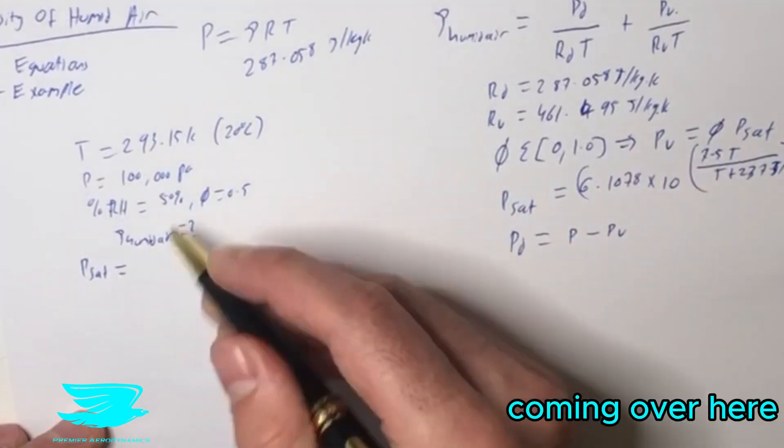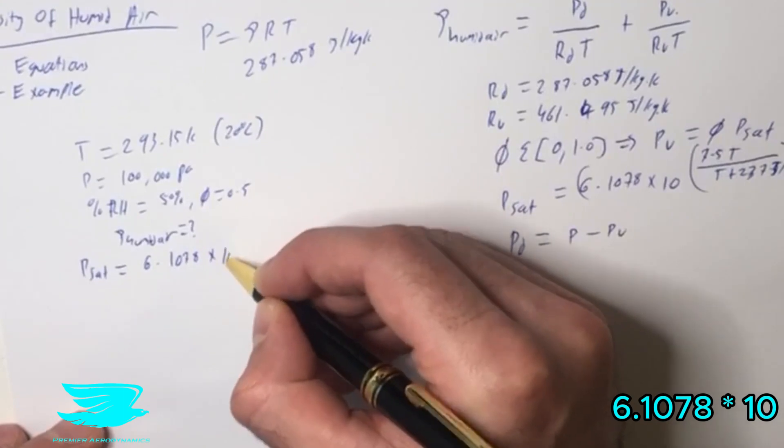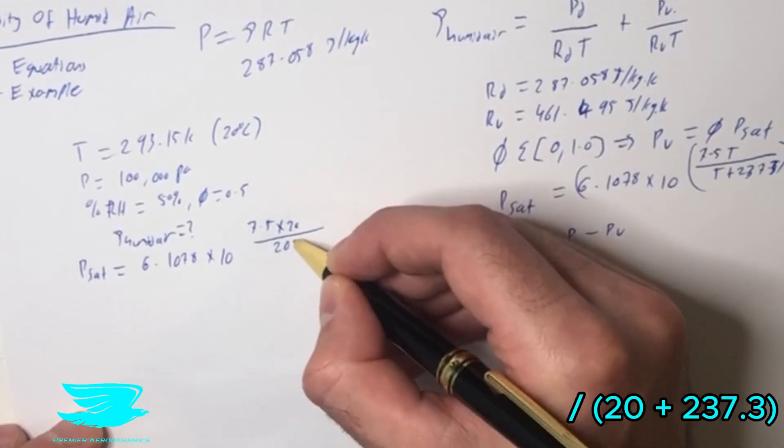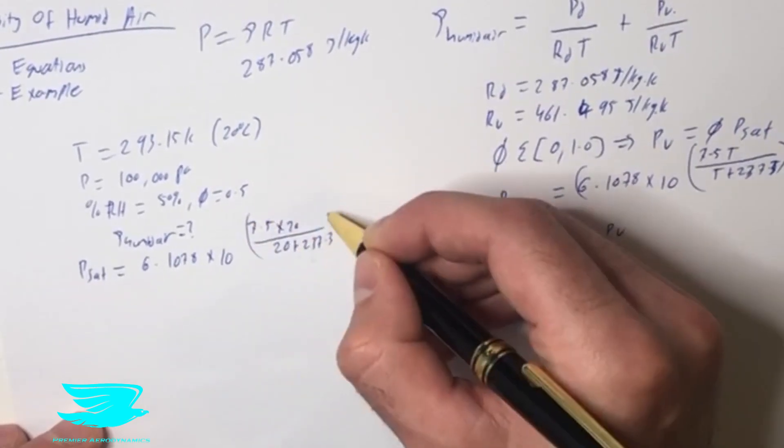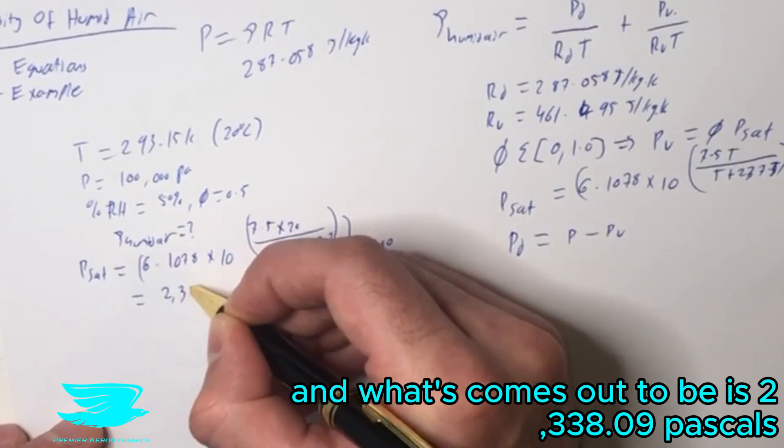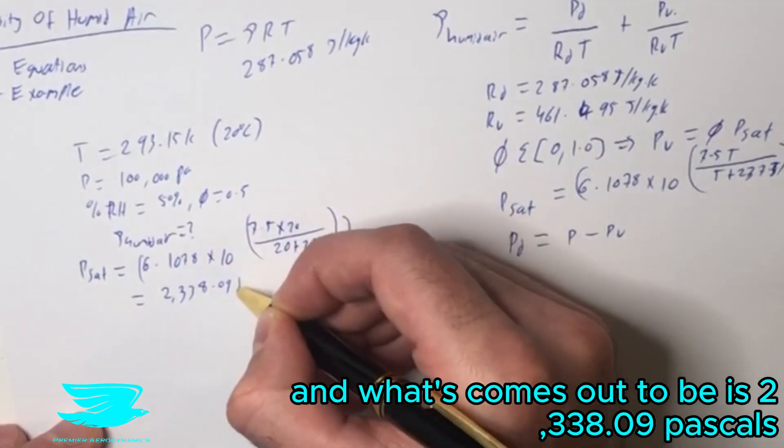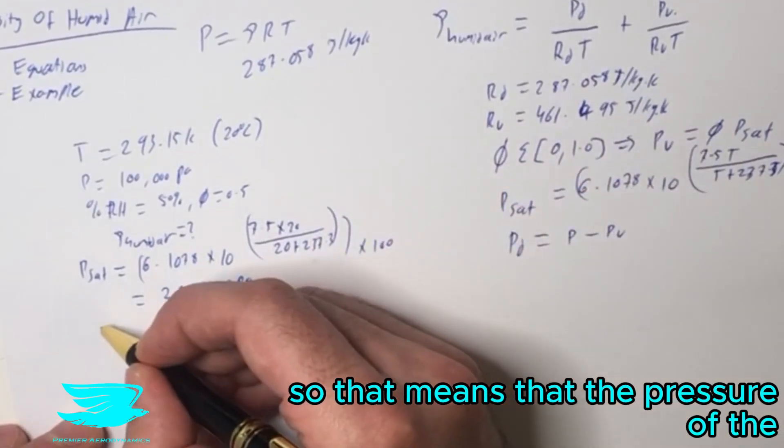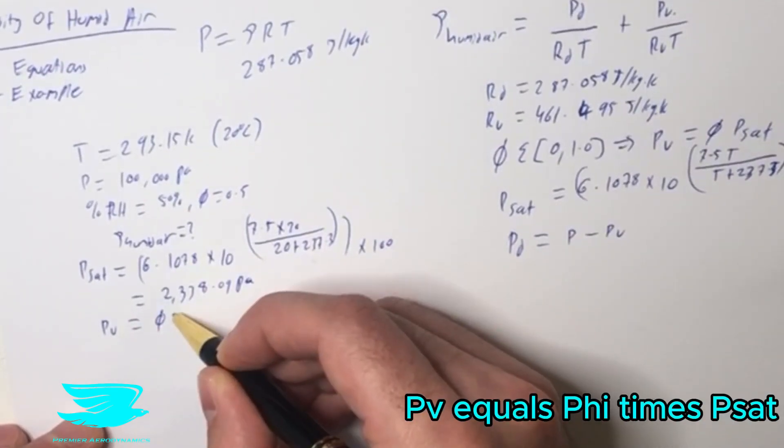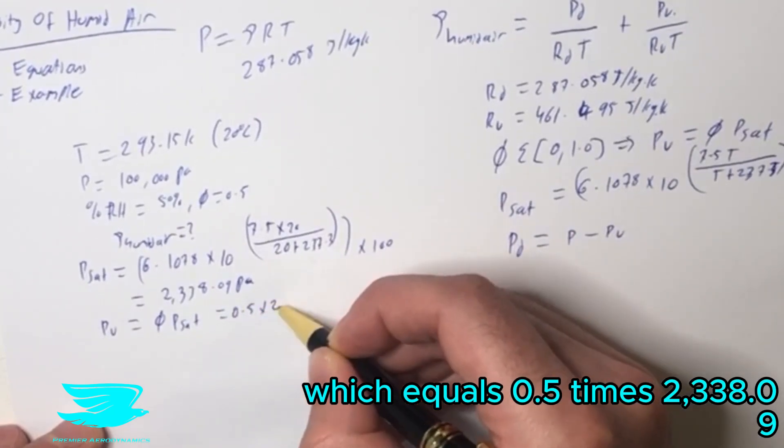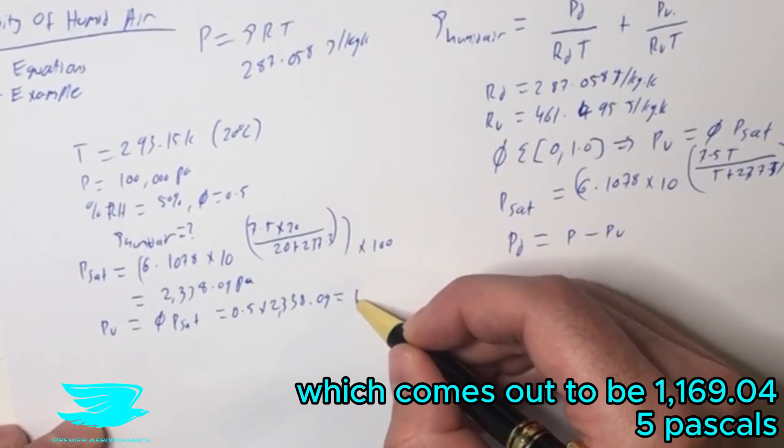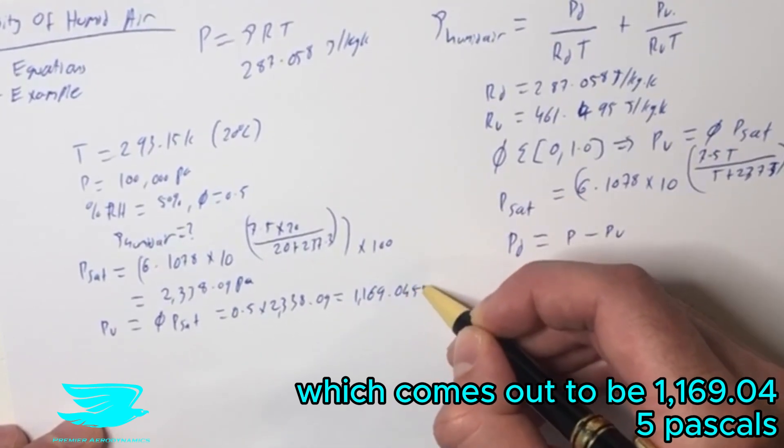PSAT equals, using this equation, 6.1078 times 10. It's 7.5 times the temperature in Celsius, which is 20, divided by 20 plus 237.3. Now times this by 100 in total. What this comes out to be is 2338.09 Pascals. That means the pressure of the water vapor section is PV equals phi times PSAT, which equals 0.5 times 2338.09, which comes out to be 1169.045 Pascals.